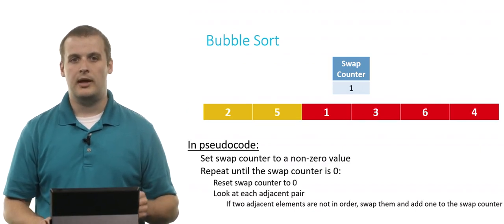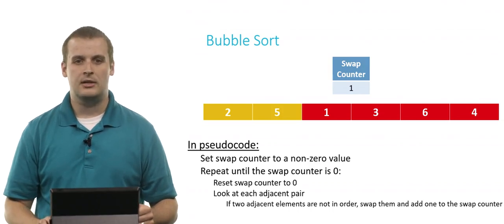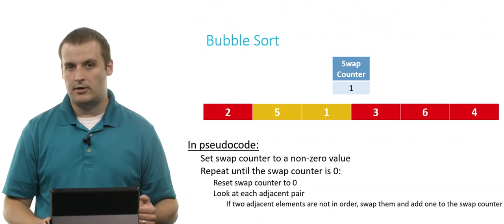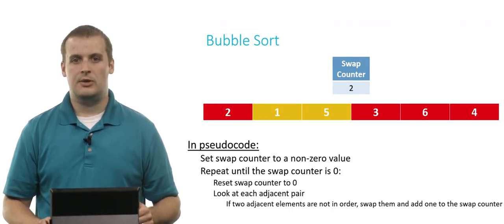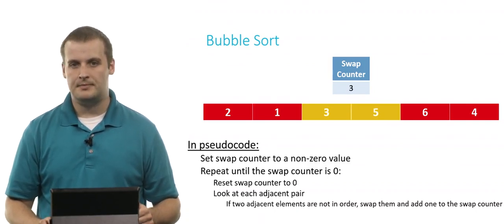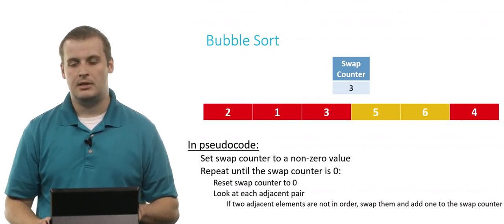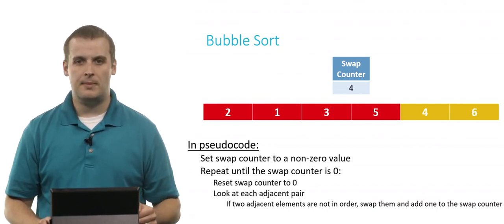Now our swap counter is one, and two and five have been switched. We look at the next adjacent pair, five and one — they're also out of order, so we swap them and add one to the swap counter. Then we look at five and three; they are out of order, so we swap them and add one to the swap counter. Then we look at five and six — they're in order, so we don't need to swap. Then we look at six and four; they are out of order, so we swap them and add one to the swap counter.